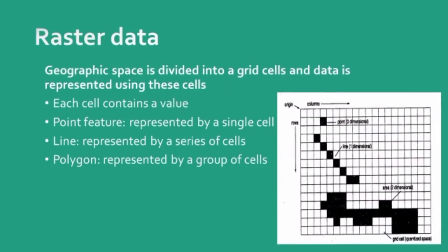Raster data is a geographic space divided into grid cells with data represented within them — similar to a photograph, where minute square spaces are filled with colours of respective areas. The square areas are so small that we do not perceive them as squares; they feel like a photograph. Similarly, in raster data the space is divided into grid cells, each cell containing a value.